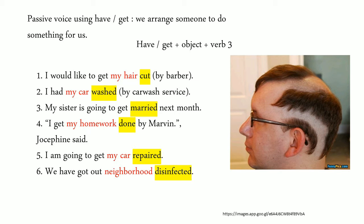Example number three: My sister is going to get married next month. We get married — we arrange the party, we invite our family, we rent the dress and the suit, and we provide the food. But we arrange someone to do that for us. You always hear 'get married,' right? It is because you have to invite the priest, ulama, or ustad to make you officially married. So you don't get yourself married by yourself — you need official people to do that for you.